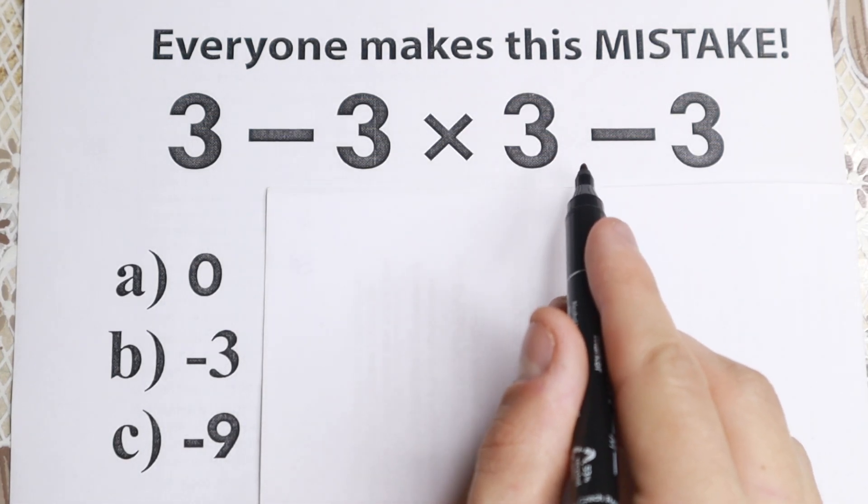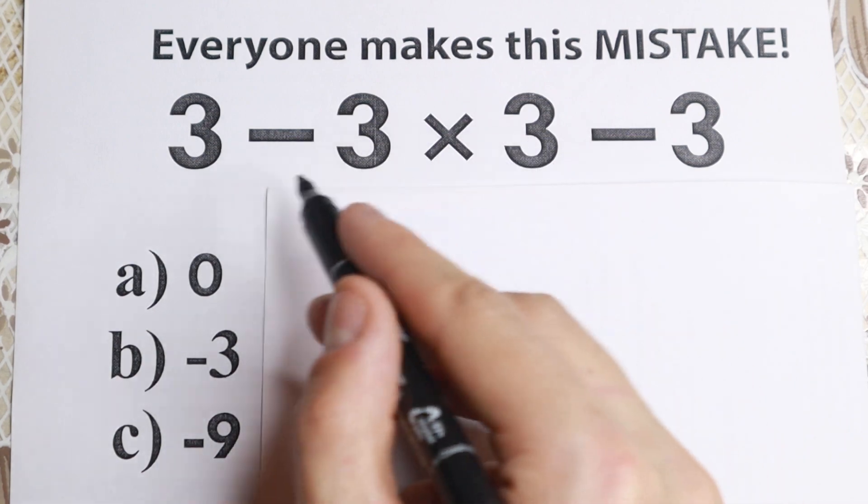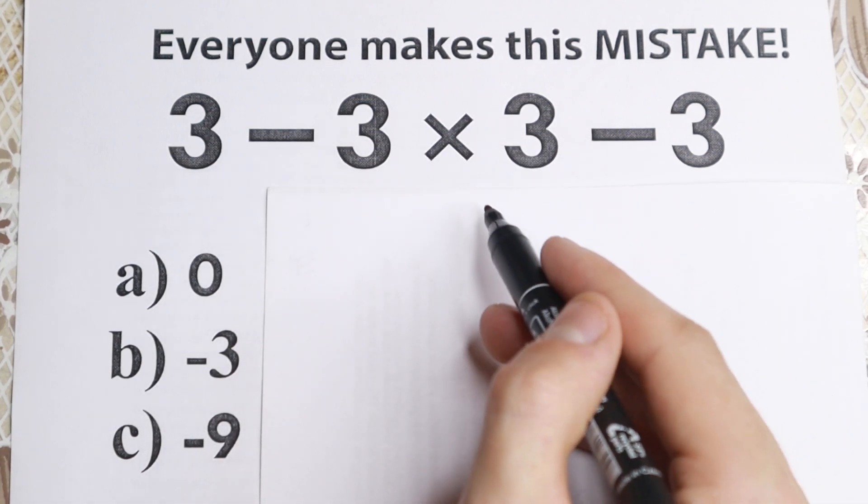So I want you to use your calculator right here. Here is the problem: we have 3 minus 3 times 3 minus 3. As you can see, no squares, no cubes, no hard operations. We have only subtraction and multiplication.